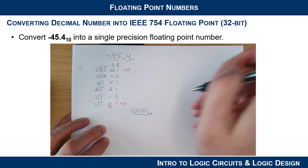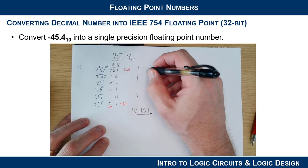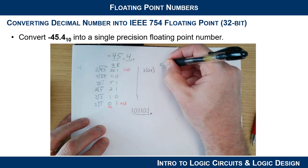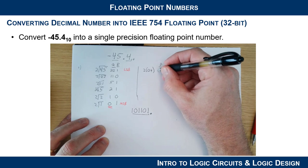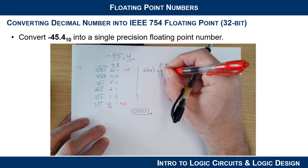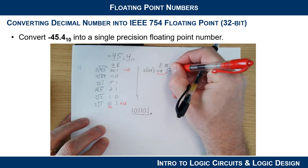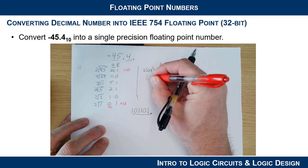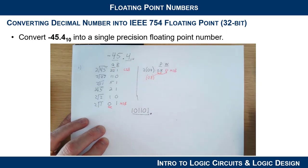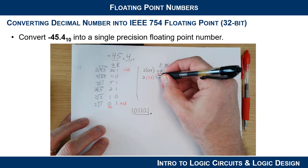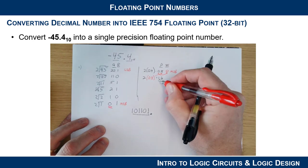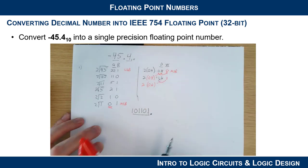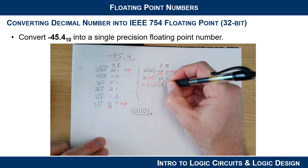Now the more interesting part: converting 0.4 into fractional binary. We repeatedly multiply by 2 and track the whole number portion of each product. Starting with 0.4: 2 × 0.4 = 0.8 → bit 0; bring down 0.8: 2 × 0.8 = 1.6 → bit 1; bring down 0.6: 2 × 0.6 = 1.2 → bit 1.